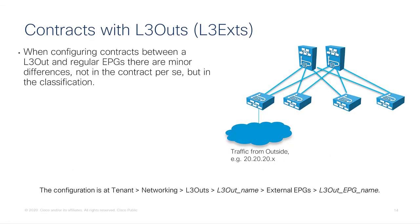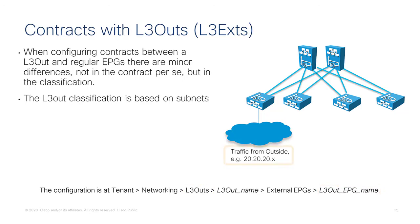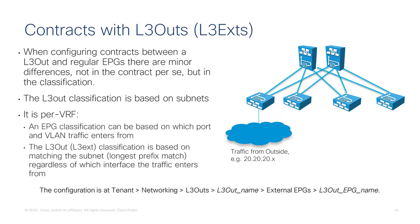If you need to create contracts to allow traffic from the outside and from internal endpoints to the outside, this configuration is done similarly to regular EPGs. The key difference is that to classify traffic from the outside, you go under the layer 3 out and define the external EPGs there, specifying which external subnets to match — for instance 20.20.20.0. This classification is per VRF, so even if the layer 3 external is defined in a given layer 3 out, it can match traffic entering from any layer 3 out of that VRF, using longest prefix match. Other than this, contracts between layer 3 outs and EPGs are absolutely the same as contracts between normal EPGs.